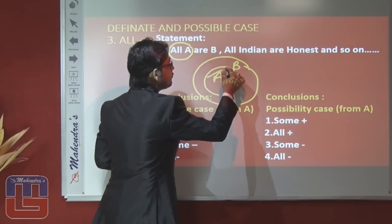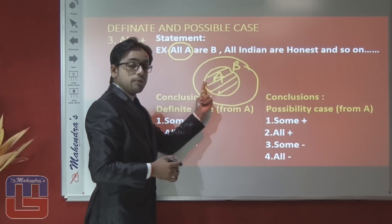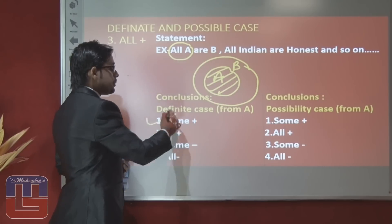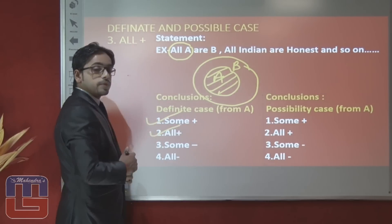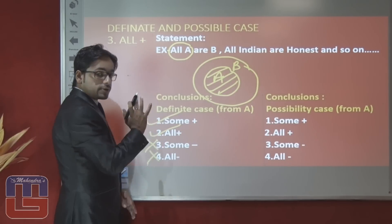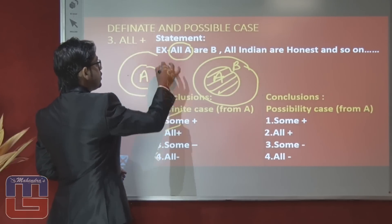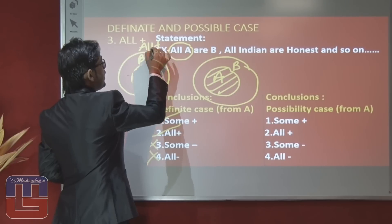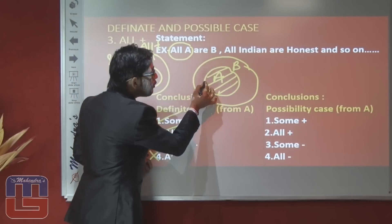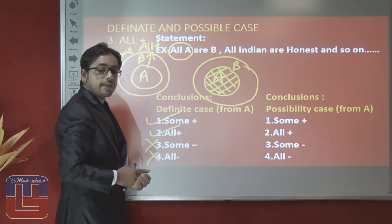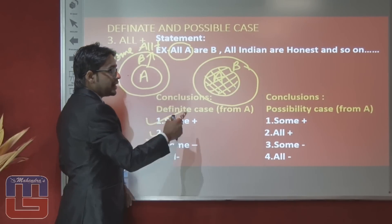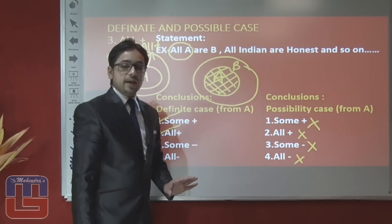In the case of 'all A are B,' we have definite information about A — all the information about A is in positive sense. So: some A are B is true, all A are B is also true. The last two conclusions regarding negatives are false because if a statement is positive, the answer will be in a positive manner — only two definite answers will be true: all positive and some positive. Regarding A to B in possibility: if you have all the information about the first variable to the second, it cannot be a possible case — so all possibility conclusions from A to B are false.